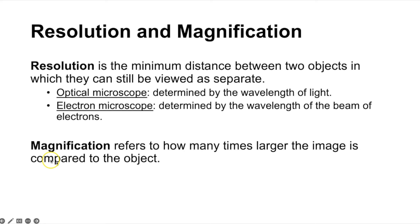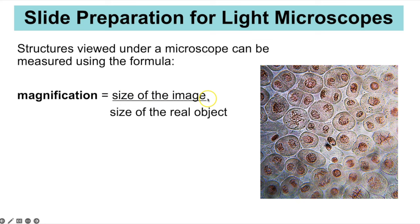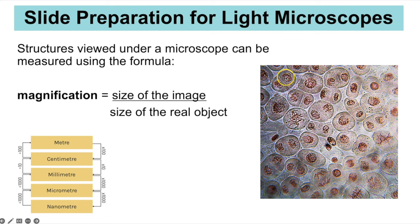To work out magnification, you divide the size of the image by the size of the real object. In an exam, they would tell you the actual length and you'd measure the image with a ruler — but it's key that both measurements are in the same units. Cells are often measured in micrometres, whereas you'll be measuring in millimetres. To convert millimetres into micrometres, multiply by 1000; to convert micrometres back into millimetres, divide by 1000.